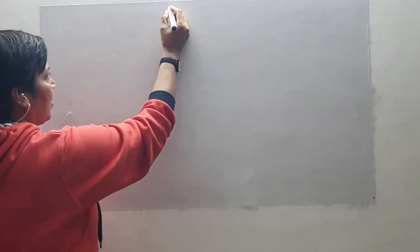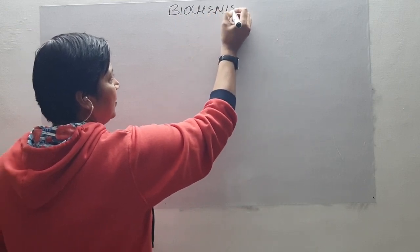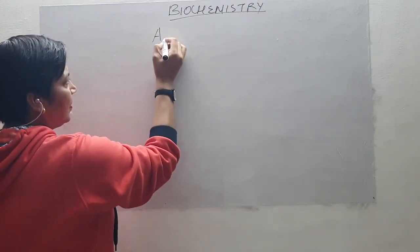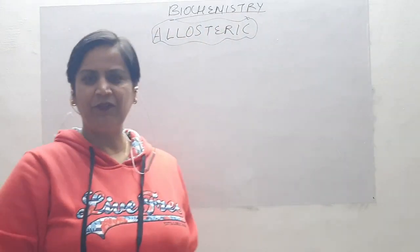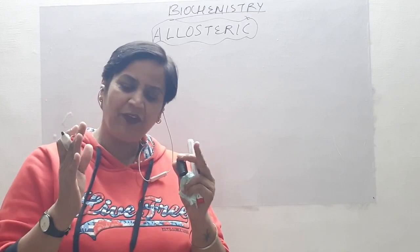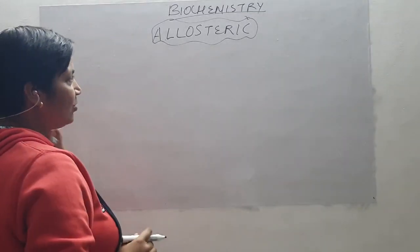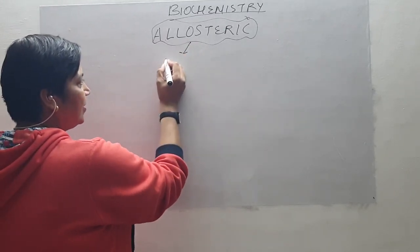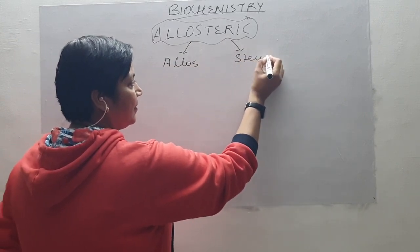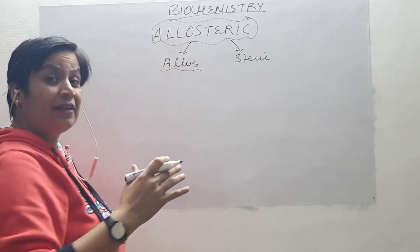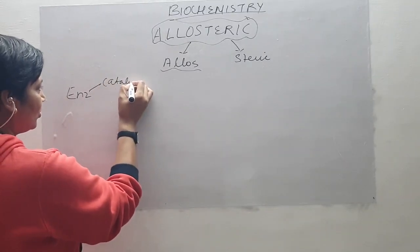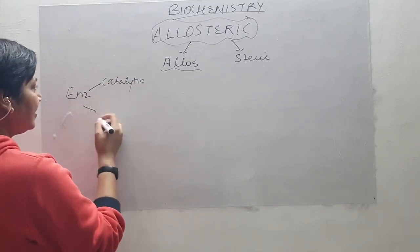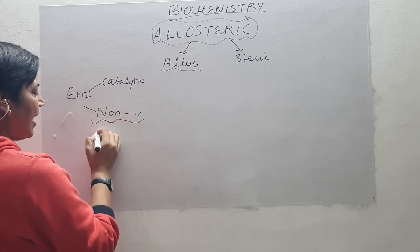Allosteric inhibition is a very important topic. To memorize the definition, we can break this word into two parts. Allosteric is made up of 'allos' and 'steric.' The meaning of 'allos' is 'some other side.' An enzyme has basically two sides: one is the active side, also known as the catalytic side, and the other side is non-catalytic, which can behave as a regulatory site.